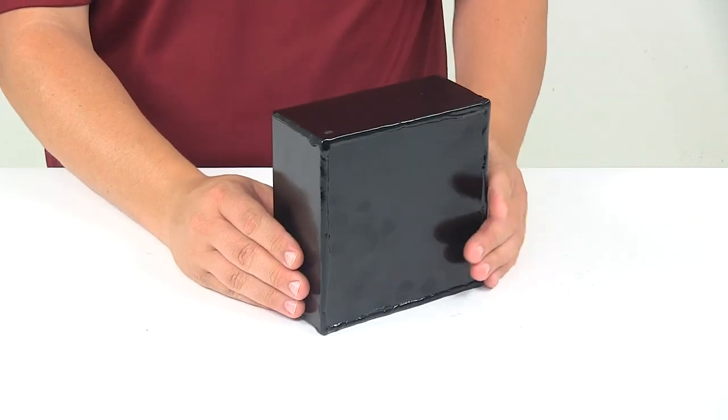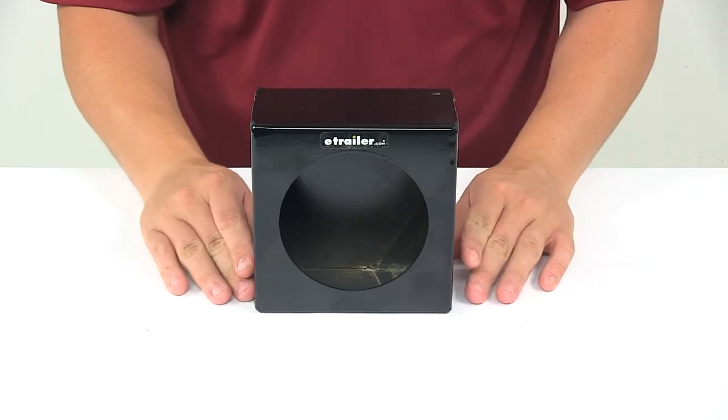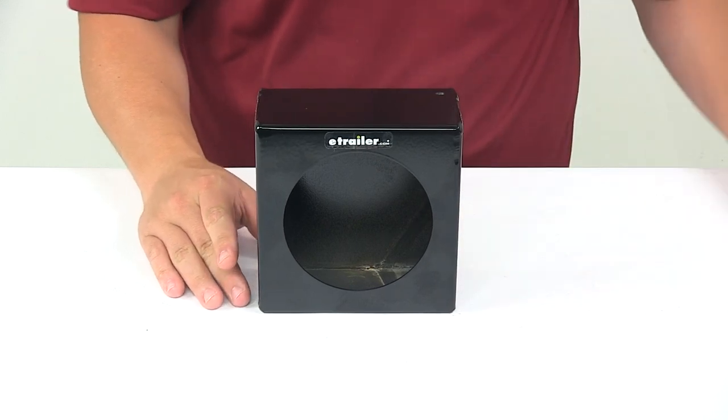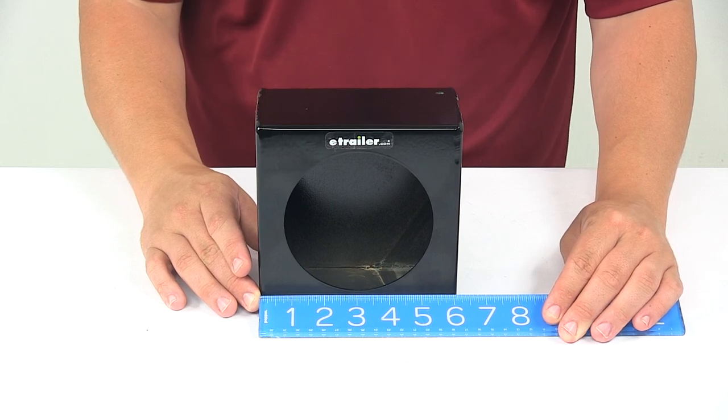It can be bolted or welded to your trailer or truck. When it comes to the overall dimensions of the unit, starting with the overall width, edge to edge going this direction is right around six inches.